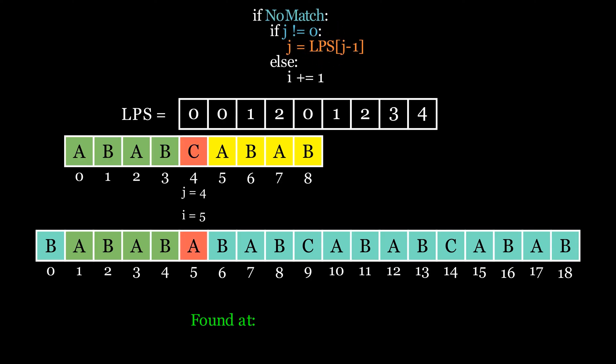When the next characters mismatch, and when the value of j is not zero, just change the value of j to the value at j minus one index of the LPS table, and repeat the process.